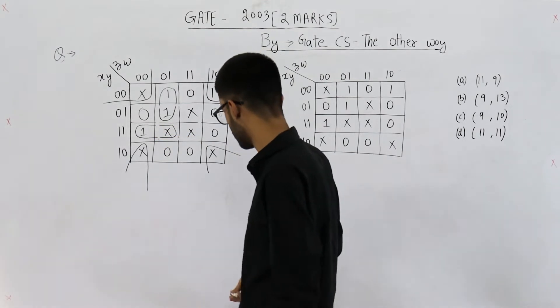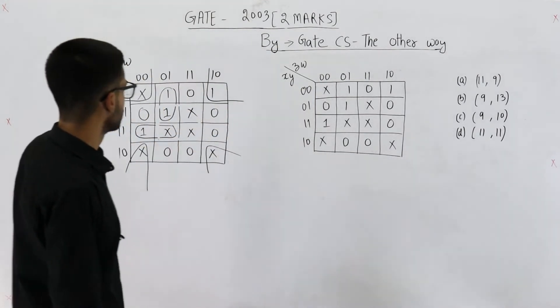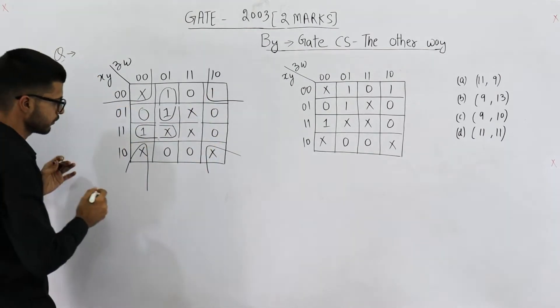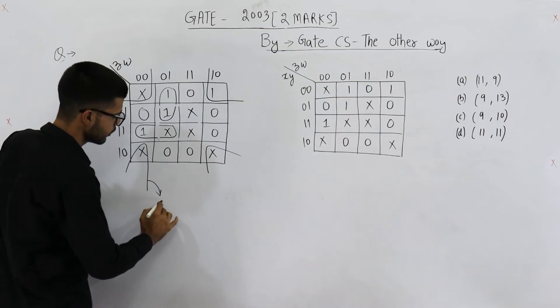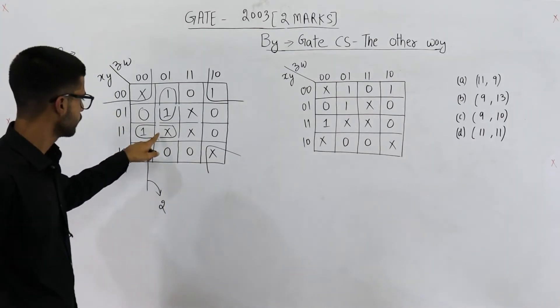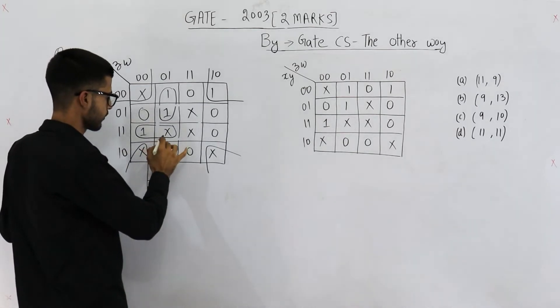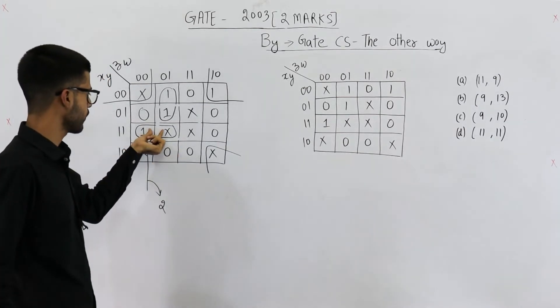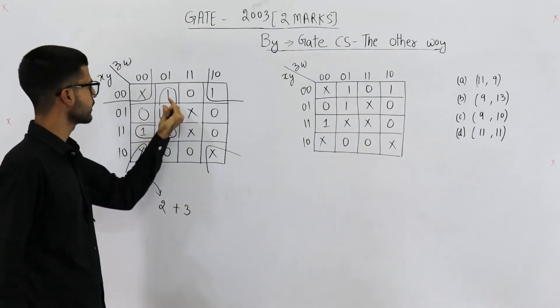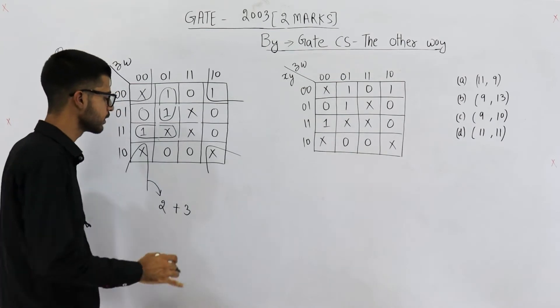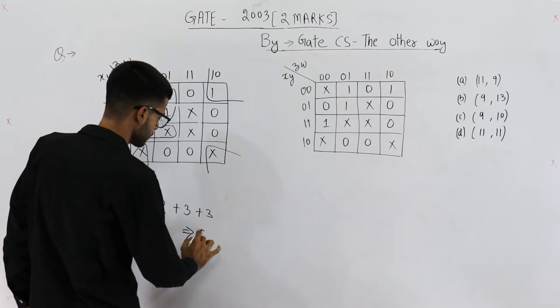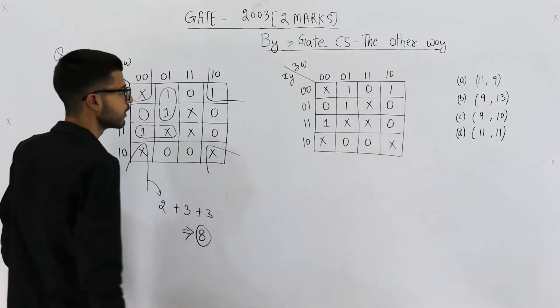Now, let's find out the literal count. So, this one is a group of four. So, for this prime implicant, you will be having two literals. For this prime implicant, this one, it is a group of two, you will be having three literals. And this one is also a group of two, you will again have three literals. So, the answer is six plus two, which is eight.